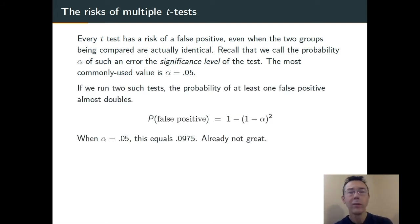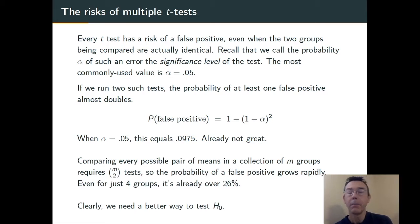If you run more than one statistical test, that probability increases, the probability of at least one false positive. If you run just two t-tests, your probability becomes 0.0975. That's the probability of at least one false positive. Not great. If you have m groups and you want to compare them pair-wise, you're going to have m-choose-two tests to run. With a 5% error rate in each one, even just with four groups, you already have a probability of at least one false positive of over 26%. Clearly, we need a better way to test this null hypothesis than just these two sample t-tests.